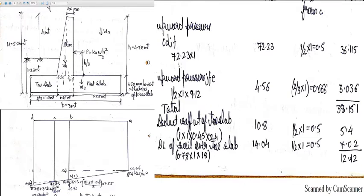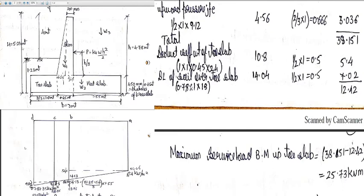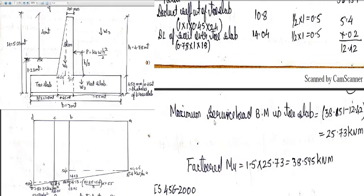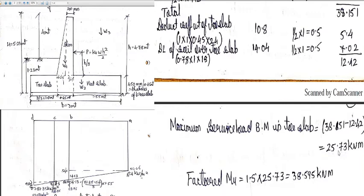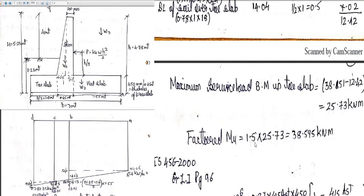Earth is also present on the toe slab. Considering the rectangular portion: 0.78 × 1 × 18 = 14.04 kN, acting at 0.5 m from C, giving a moment of 7.02 kN·m. The total downward moment is 12.42 kN·m and total upward moment is 38.151 kN·m. The net bending moment is 38.151 − 12.42 = 25.73 kN·m. The factored moment = 1.5 × 25.73 = 38.595 kN·m.